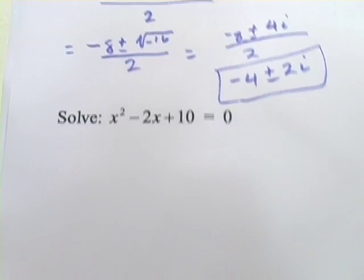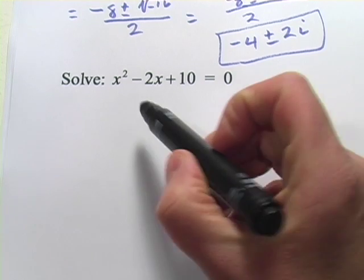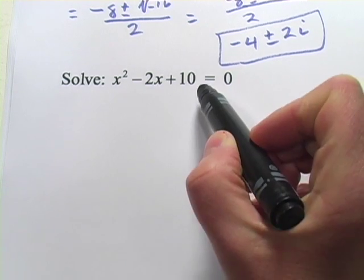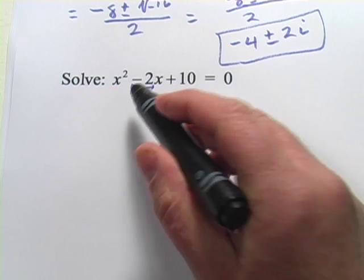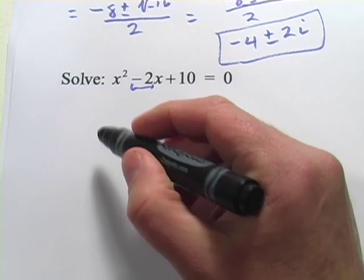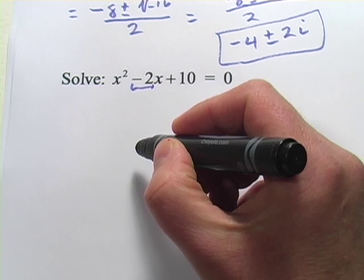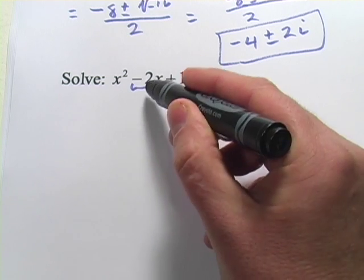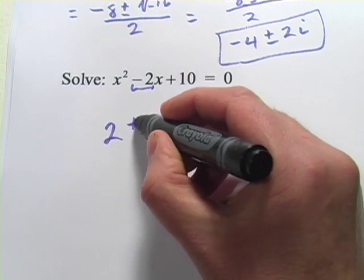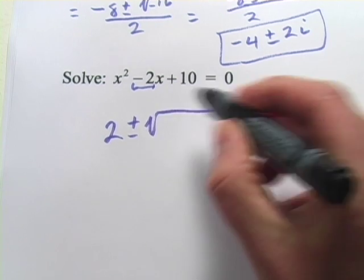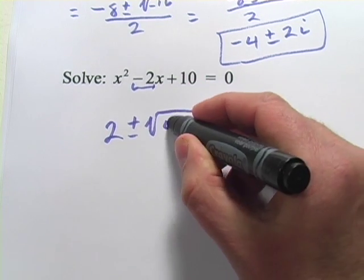Let's try another one like that. So we've got x squared minus 2x plus 10. So b is negative 2. Always be careful about the signs. So when we start with negative b, it's going to be negative negative 2, or positive 2. Then plus or minus the square root of b squared. Well, negative 2 squared is 4.